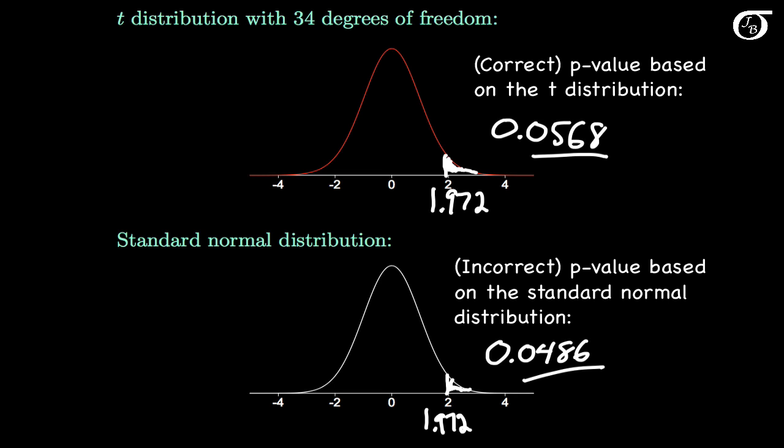I suggest — and it's a point of view shared by many others — that if we have a t-statistic, we should find the p-value based on the t-distribution, and not simply say we have a large enough sample size so the standard normal distribution is good enough.